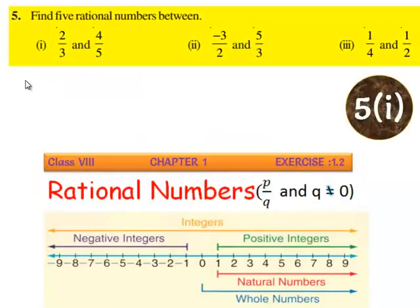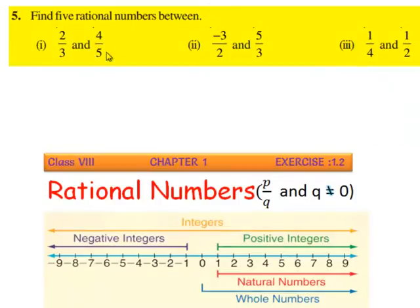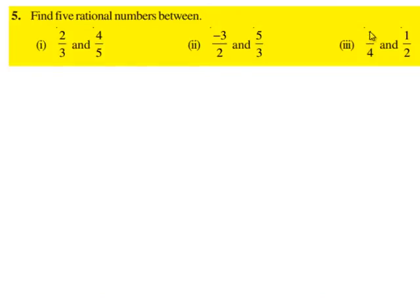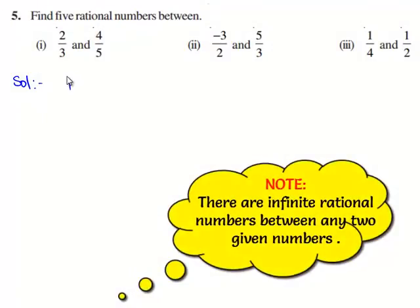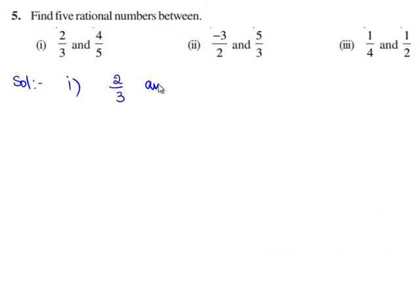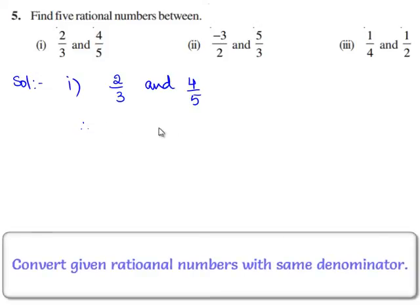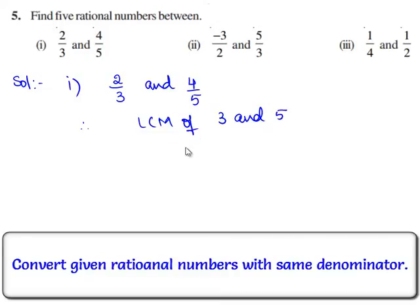Now, let us move on to the fifth question. The question is: find 5 rational numbers between 2 by 3 and 4 by 5. The first bit is to find 5 rational numbers between 2 by 3 and 4 by 5. Let us express these rational numbers with a common denominator. As we know, the LCM of 2 prime numbers is their product itself. Therefore, the LCM of 3 and 5 is 5 times 3, which is equal to 15.